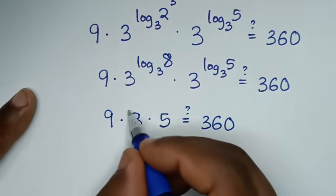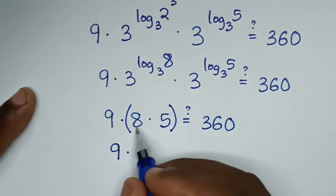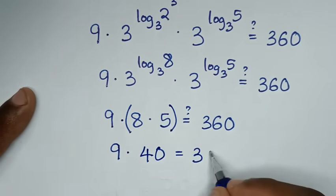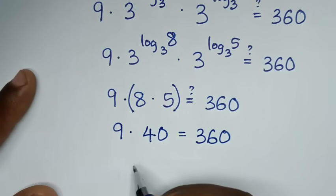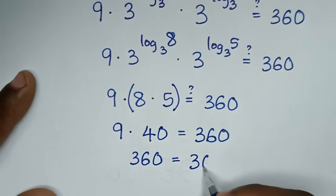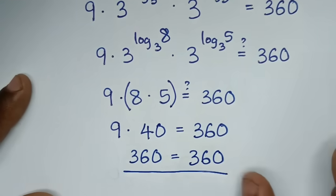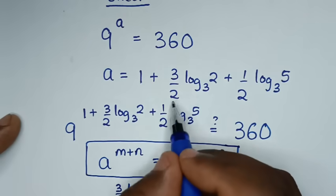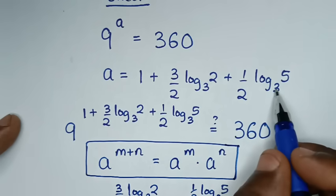Then here we will multiply: 9 times 8 times 5 — 8 times 5 is 40 — it is equal to 360. So left side and right side are equal, then it is true for the value of a, which is 1 plus 3 over 2 log of 2 base 3 plus 1 over 2 log of 5 base 3.